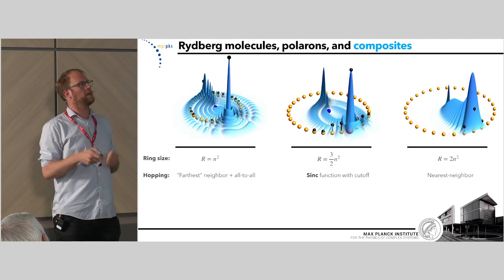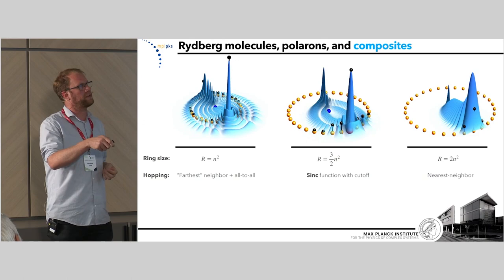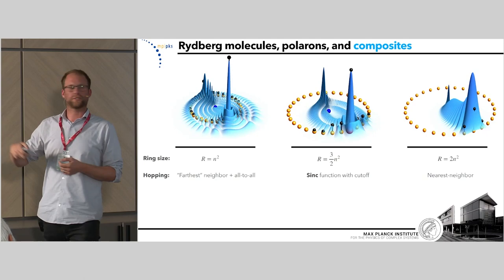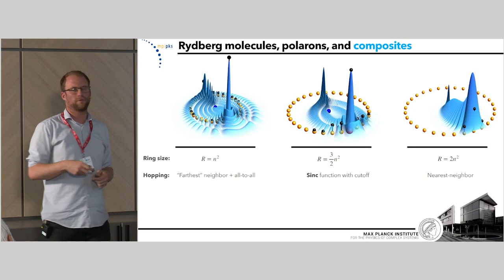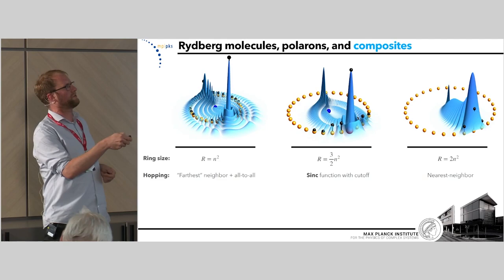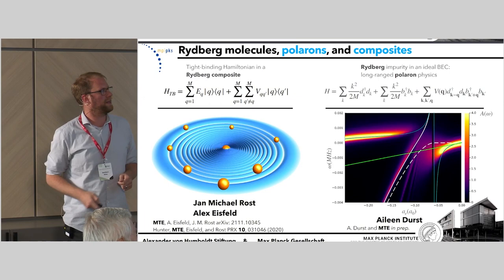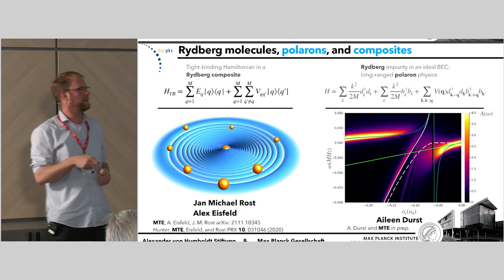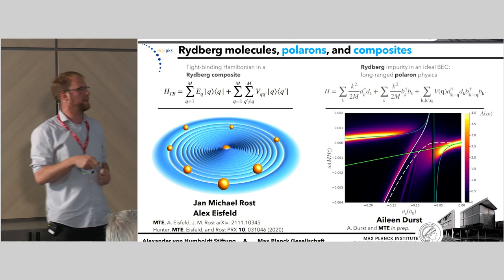If you're interested, you can check out the paper to see what else you can do with this, because tight-binding with nearest-neighbor hopping is kind of boring. Going to smaller ring sizes you can see interesting things like hopping that goes like a sinc function eventually dying off, giving rise to something like mobility edges at finite sizes, or cases with all-to-all coupling but a dominant coupling to the opposite neighbor. With that I'd like to conclude and thank my co-authors: Jan-Michael Rost and Alex Eisfeld on the Rydberg composites, my PhD student Eileen Durst working on the polaron problem, and all of you for listening.